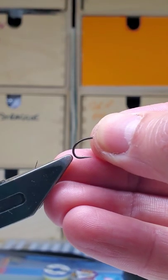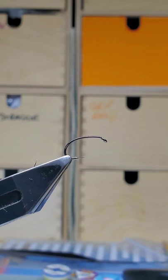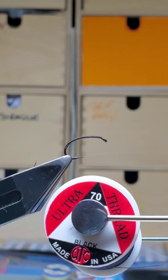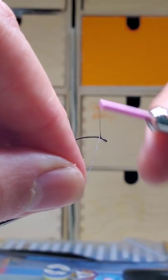I've got the size 10 hybrids of black nickel. The thread is UTC 70 in black. Let's catch the thread on.